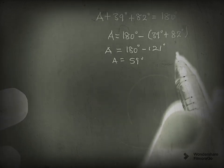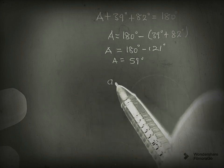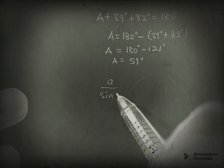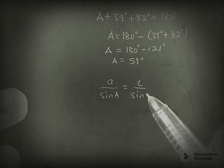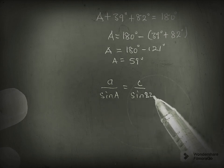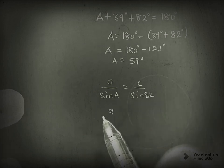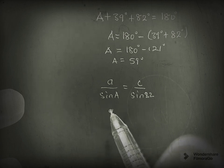So we can bring that to the formula. That is 6.73 over sin 59 equals c over sin 82.